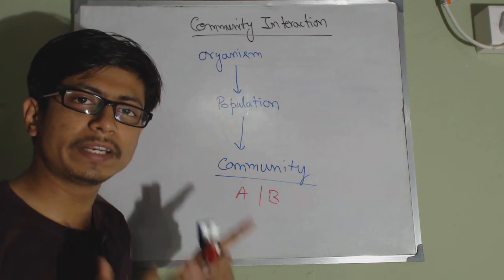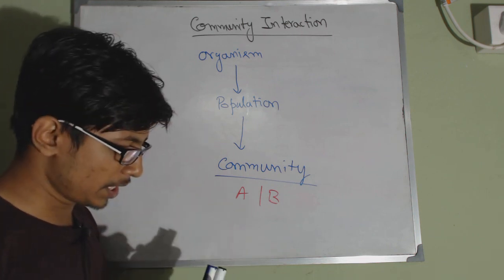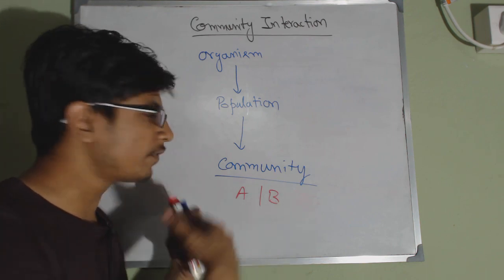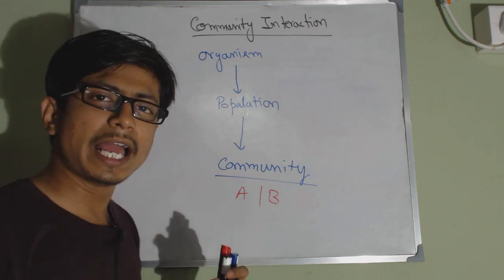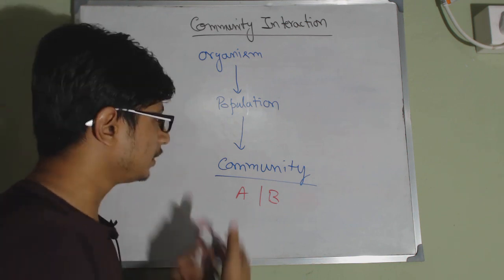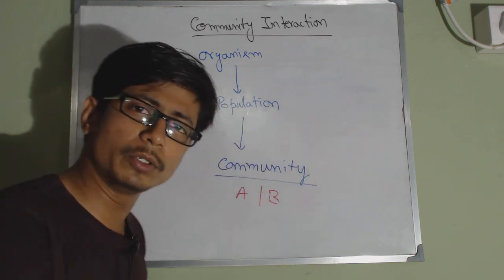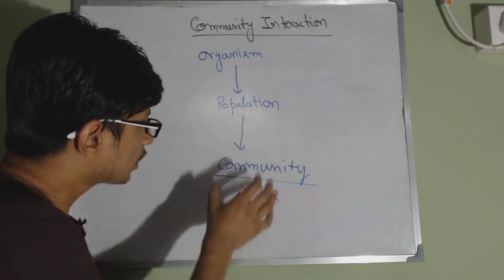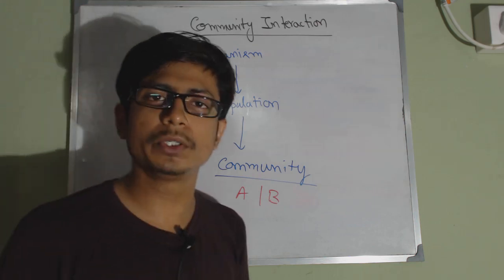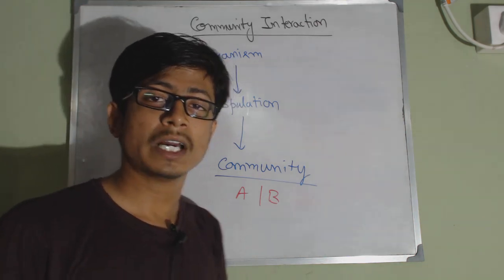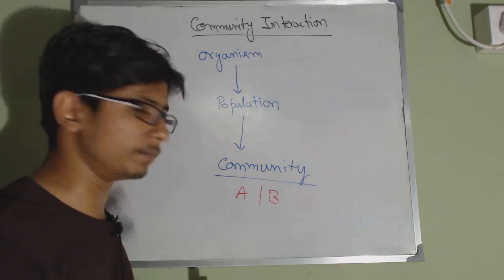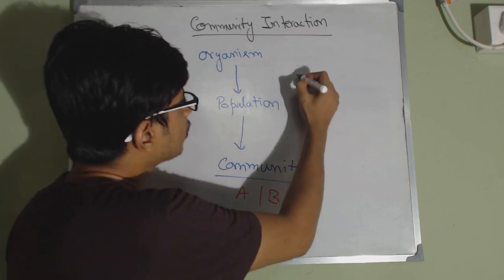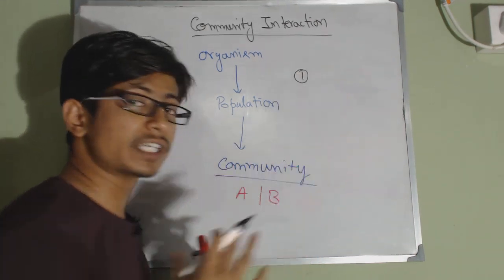Most communities have interactions between them. Those interactions are very important to survive in the environment and for their evolution. There are different modes of community interactions available in the ecosystem, and we will be talking about two different types of such interactions.